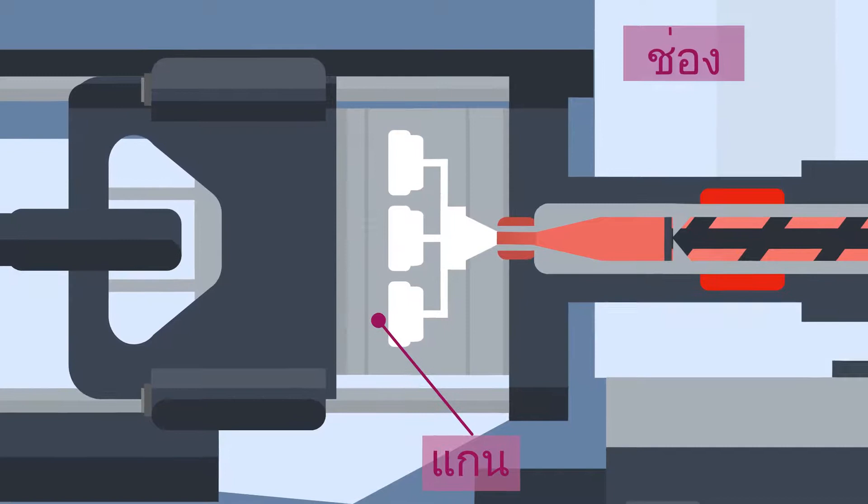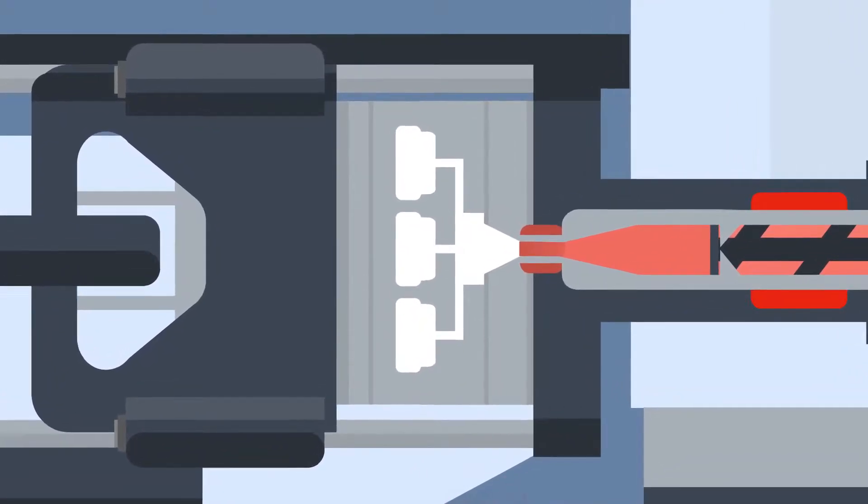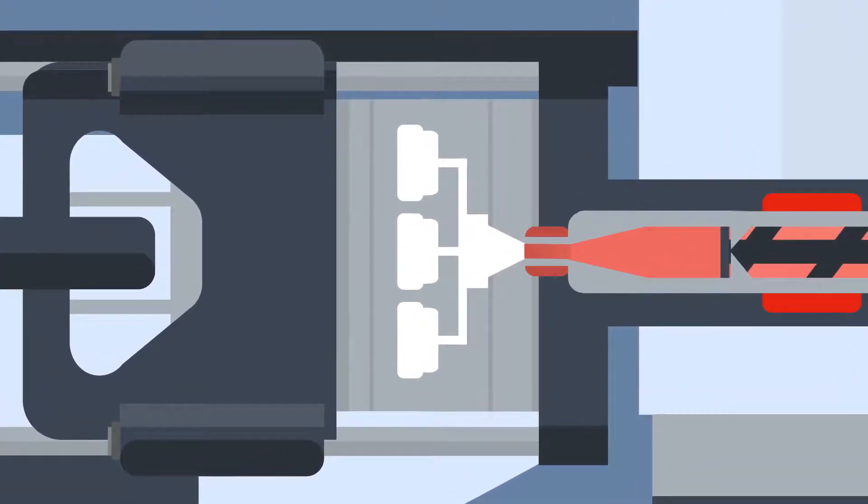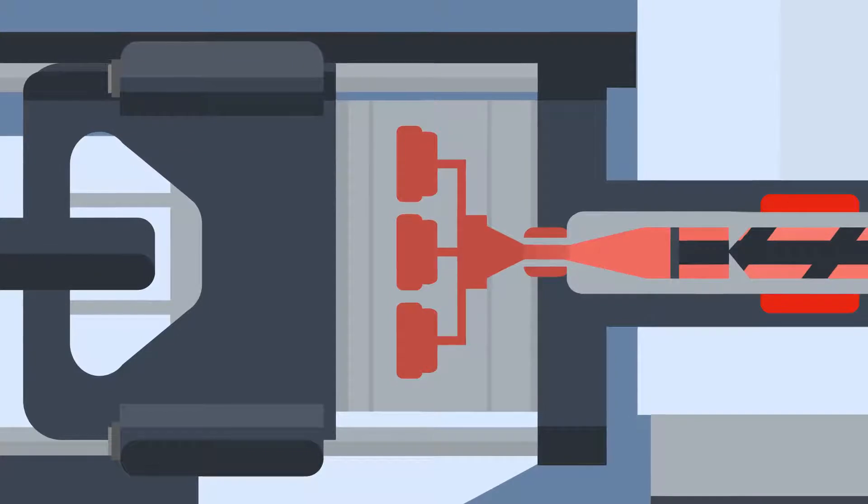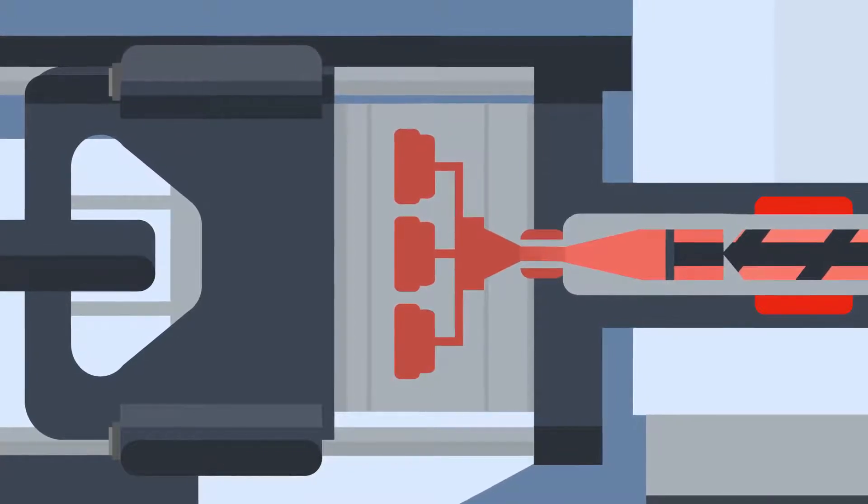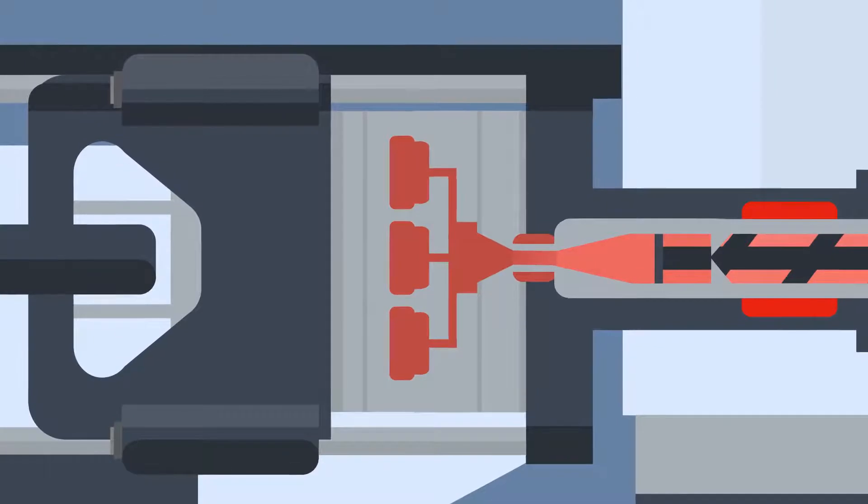When closed, the clamp will apply pressure to the tool, ready for the injection of the plastic. Once the clamp pressure is at an optimum level, the plastic is injected by a screw at high speed and pressure into the cavity. A gate inside the tool helps to control the flow of the plastic.